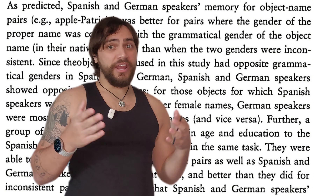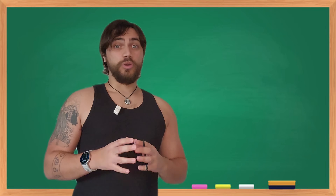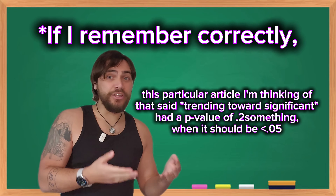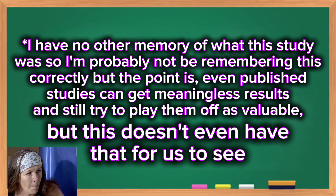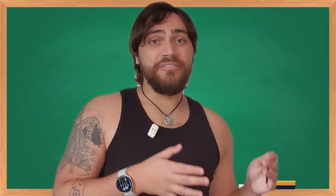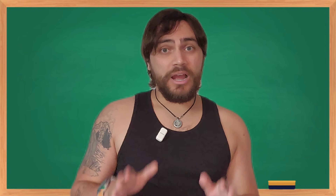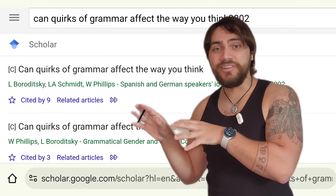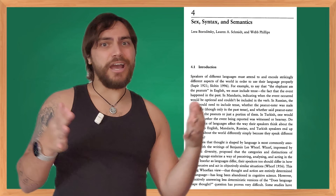They say objects with masculine English names were better remembered when that noun was masculine in their native language, and same for the feminine. But again, we still don't know what any of these objects and their names were — the only example we have is apple being named Patrick or Patricia. We also don't know the actual data for any of these results. All we have is what they've written in this journal chapter saying people 'tended to do something like this.' We don't know how strong that relationship was — was there statistical significance greater or lesser than a p-value of 0.05, which is the standard for a lot of science?